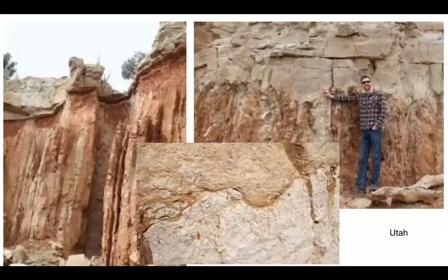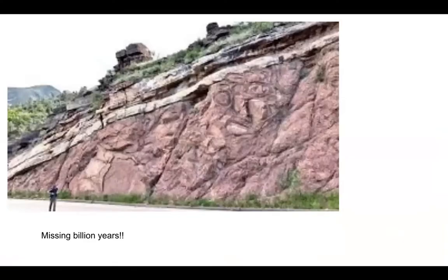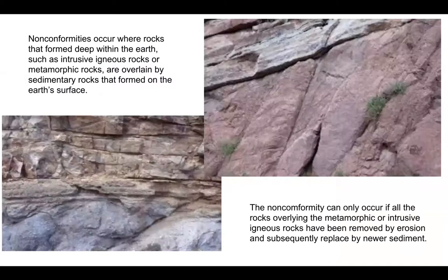Here are some other examples — you can see where there's a dip. This is Utah, which has great rock formations and canyons like Bryce Canyon. This is the missing billion years — the famous missing billion. These are the nonconformities, where igneous or metamorphic rocks come up from deep in the surface and are then overlaid by sedimentary rock. The nonconformity can only occur when those overlying rocks have been removed by erosion and then subsequently replaced.